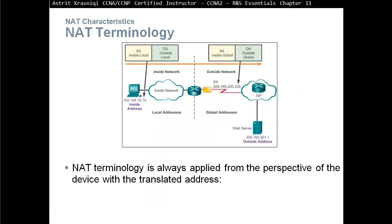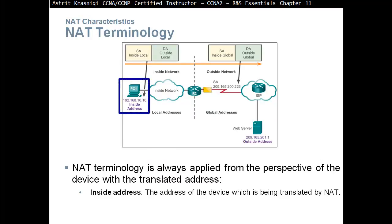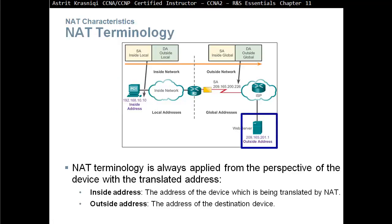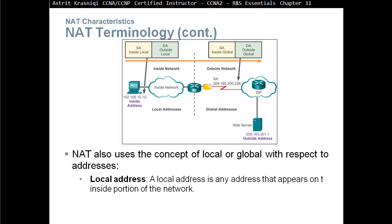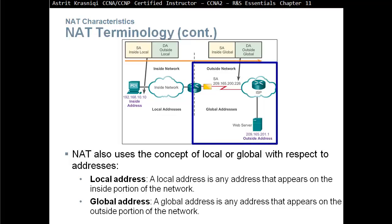NAT terminology is always implied from the perspective of the device with the translated address. The inside network refers to addresses from our internal network that are being translated by NAT. The outside address is the destination address. NAT also uses the concept of local or global: the local address appears on the inside portion of the network, and the global address appears on the outside portion.